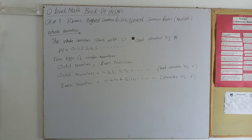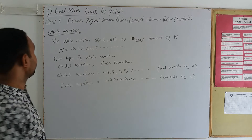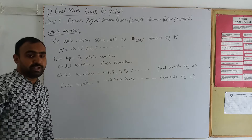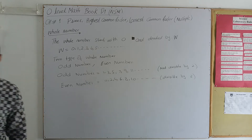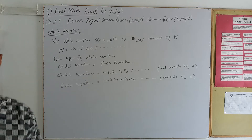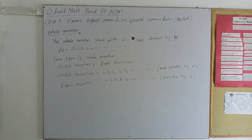Dear Friends, Chapter Number 1, Book D1. The topics covered are: Prime, Highest Common Factor, and Lowest Common Factor.